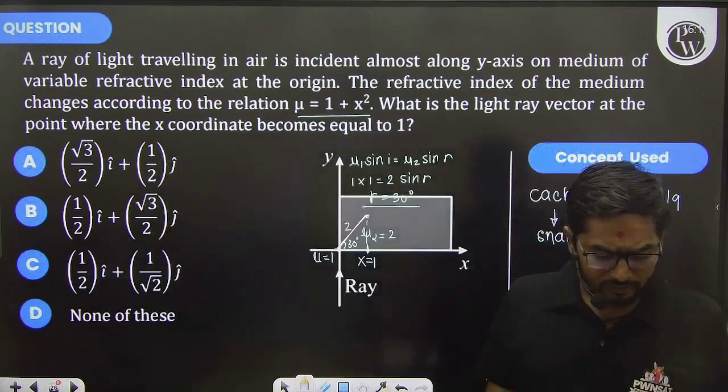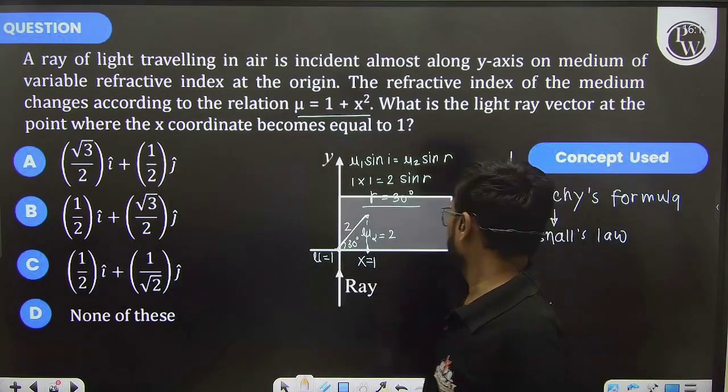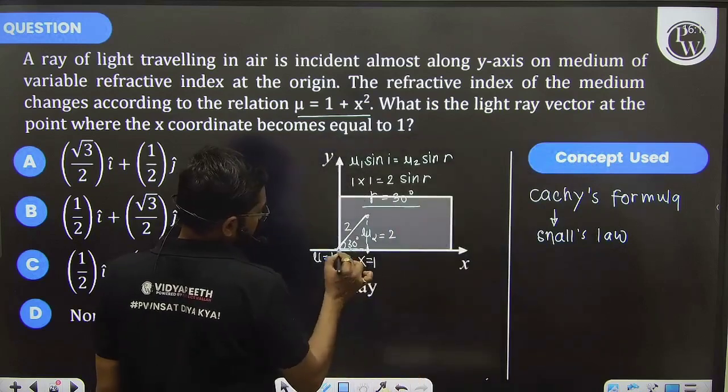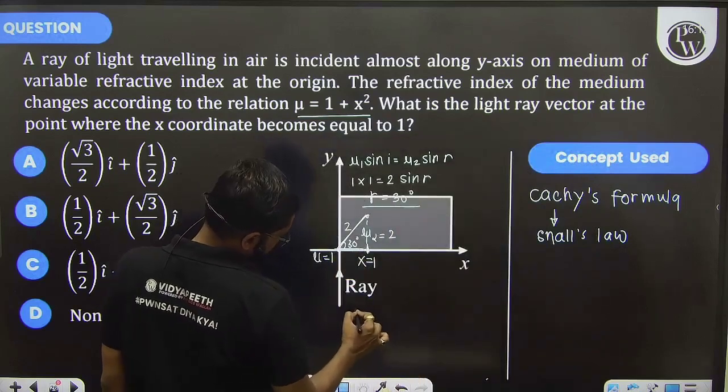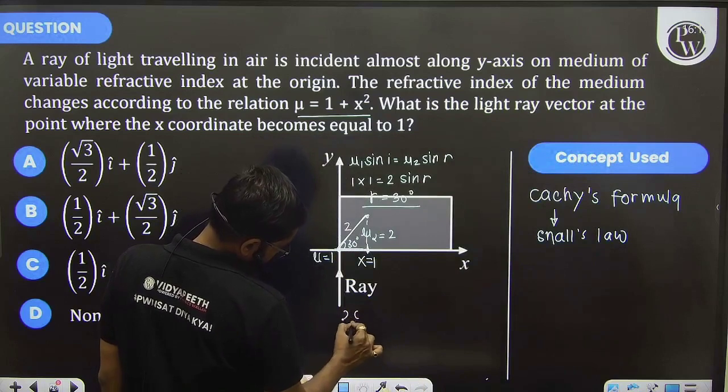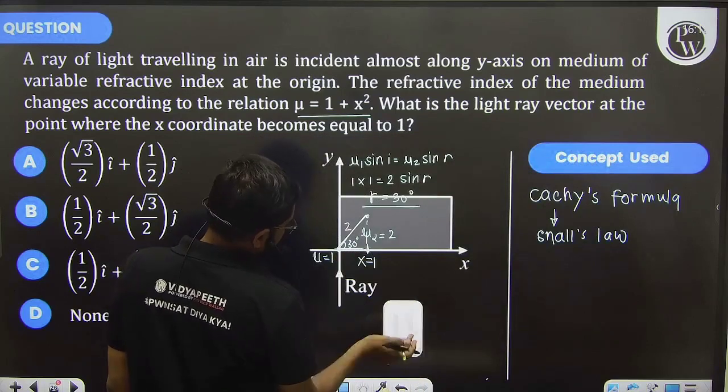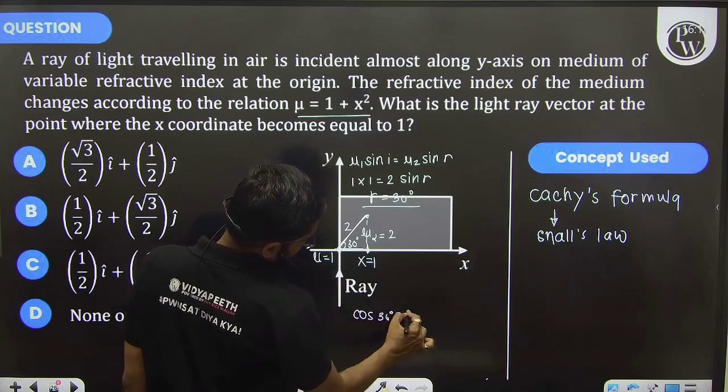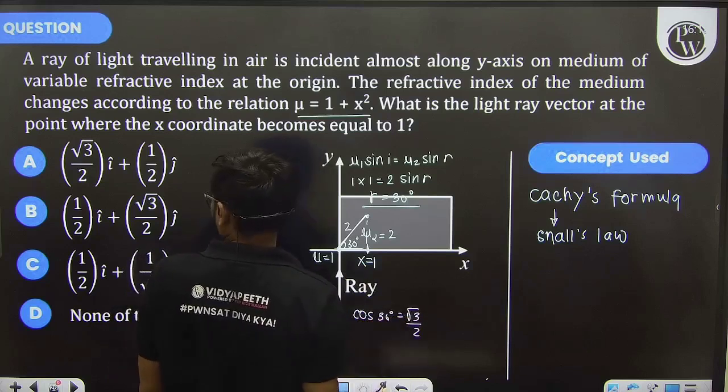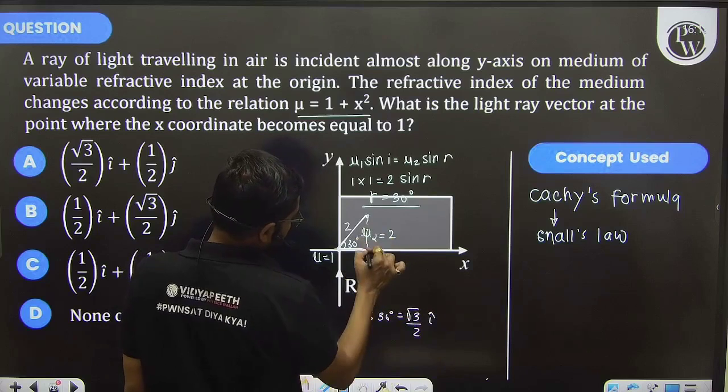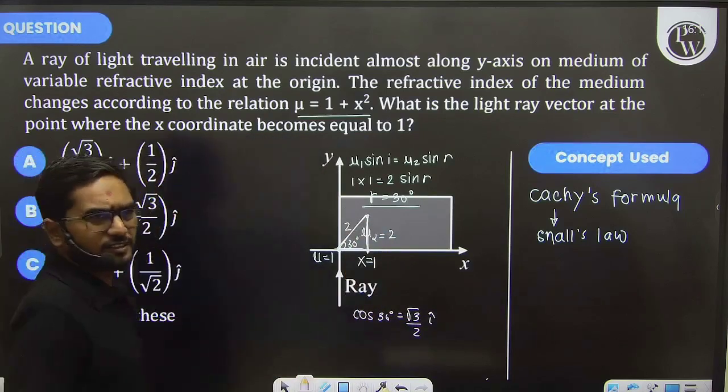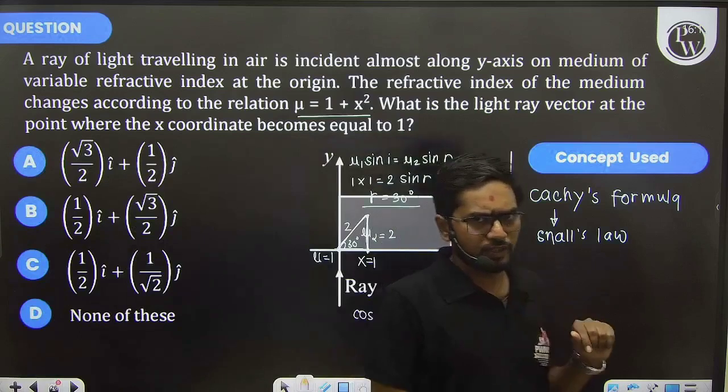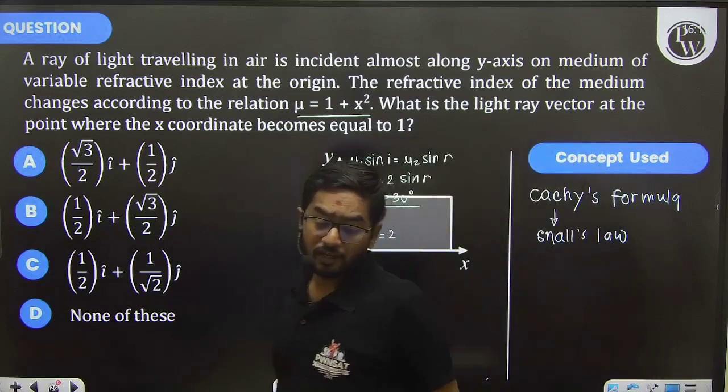Now just find the components. If you find the components here, this x component will be cos 30 degrees. So it's 2 cos 30 degrees. That cos 30 is going to be root 3 by 2 i cap, and sin 30, that will be, since it's 30 degrees for x equals 1, it will be half.